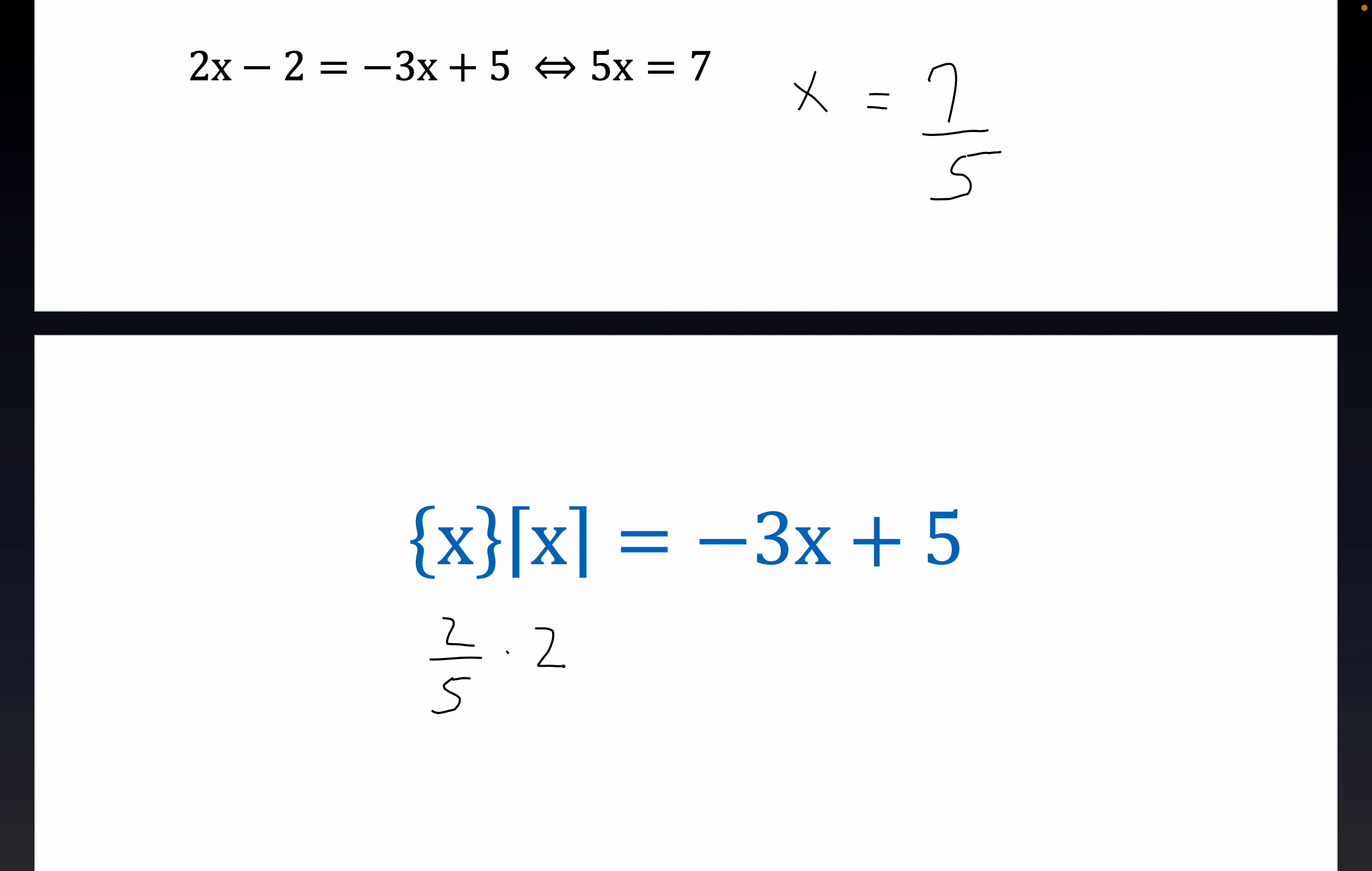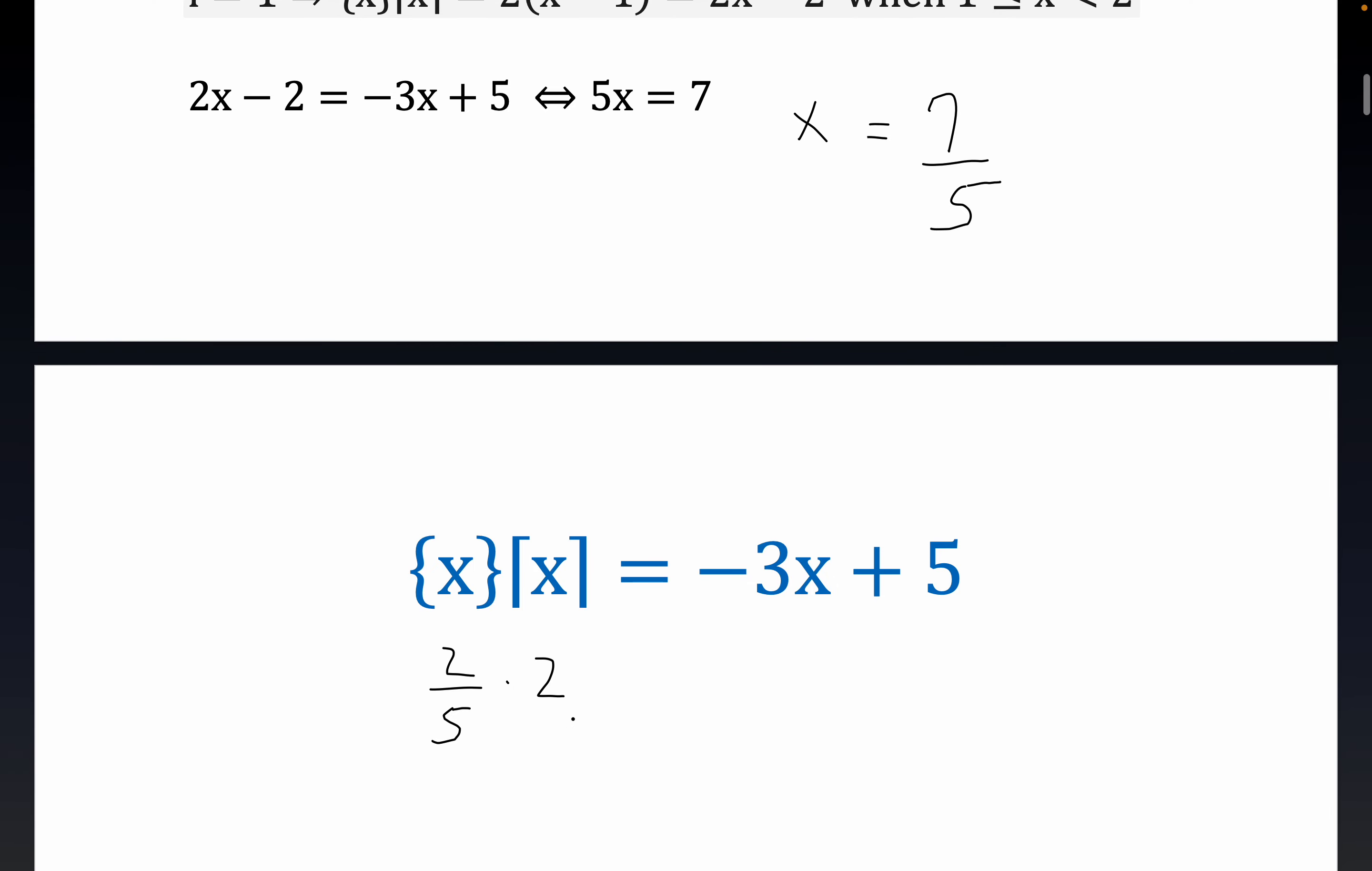Again, the ceiling, folks, is just the smallest integer that's greater than the input. Well, 2 is an integer and it's the smallest integer that is greater than 7 fifths. 3 would be a greater integer, but it would be a ceiling, so to speak, but it's not the least integer that meets that condition.